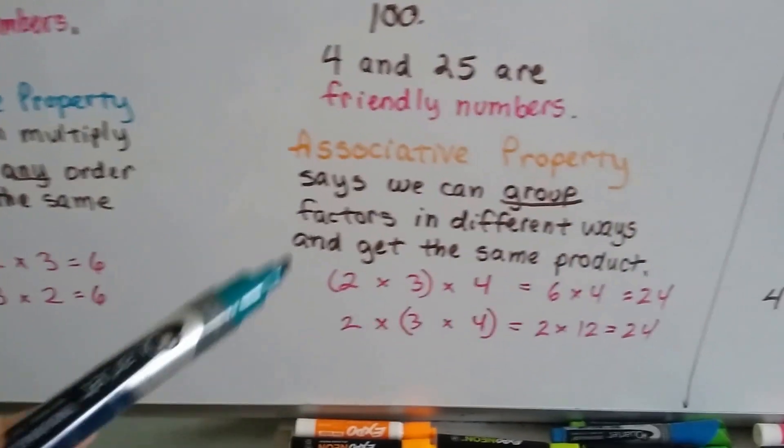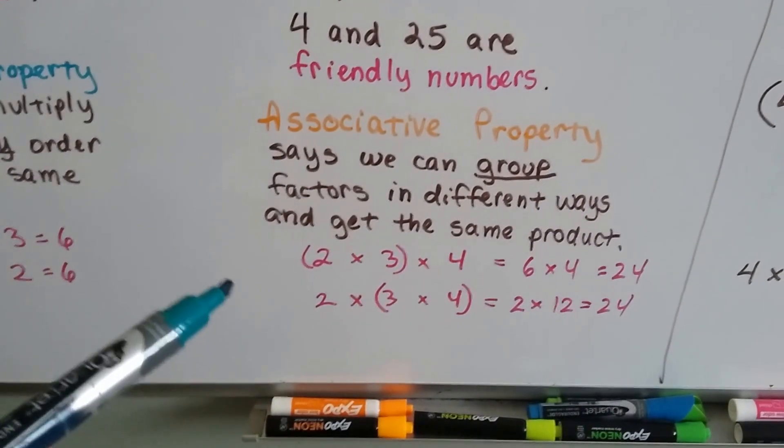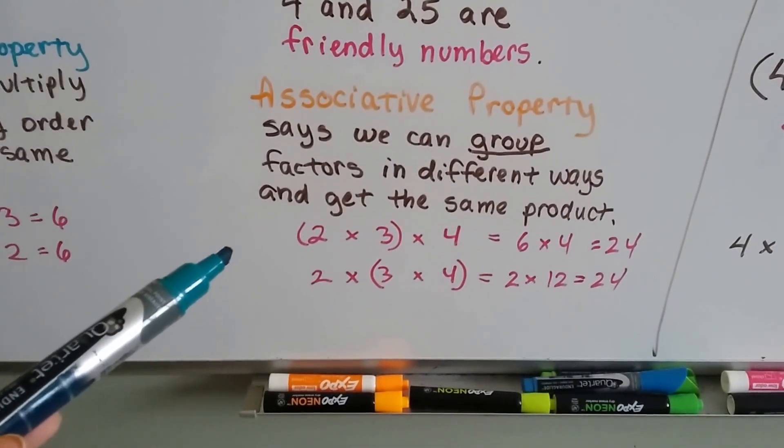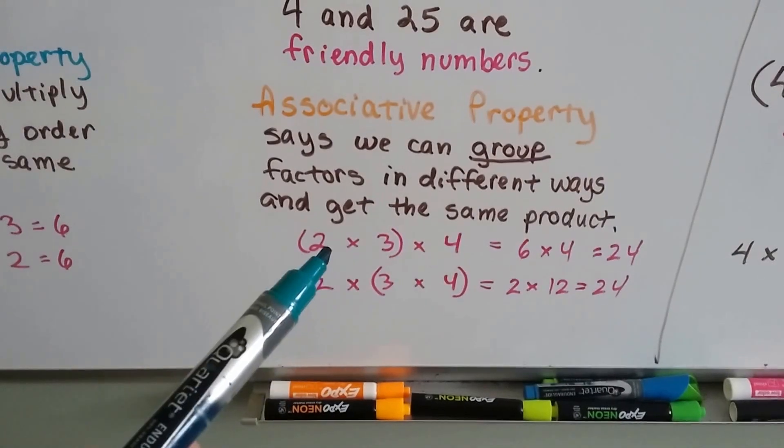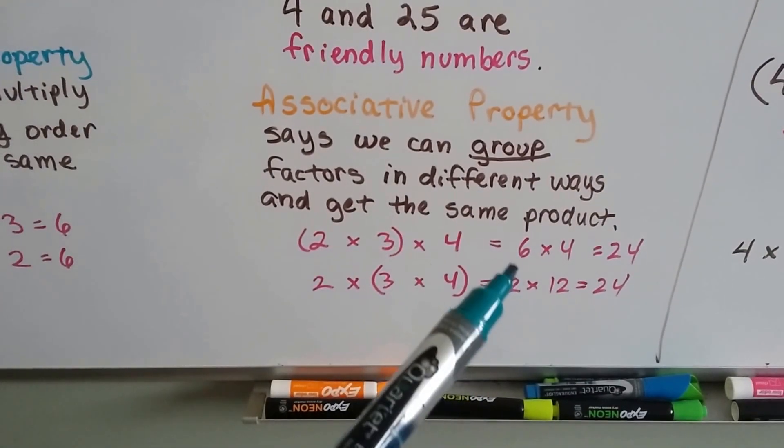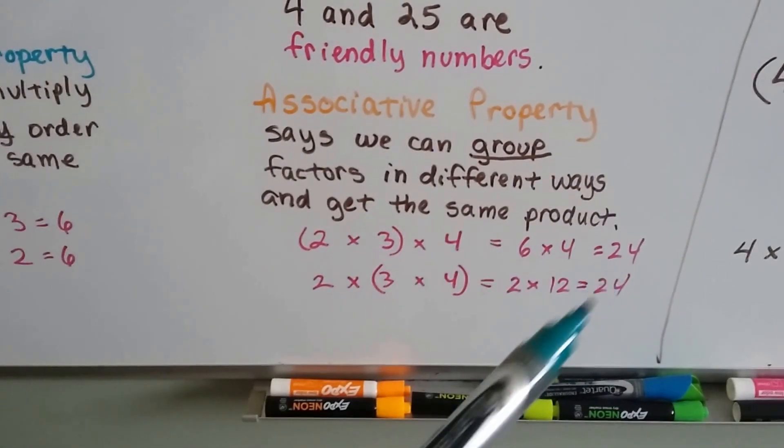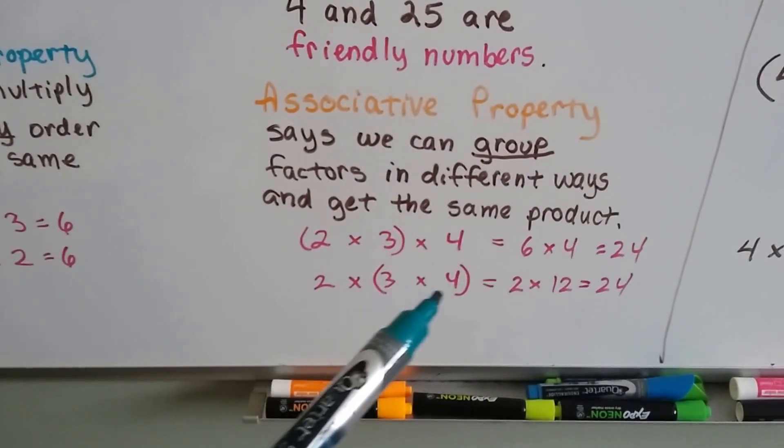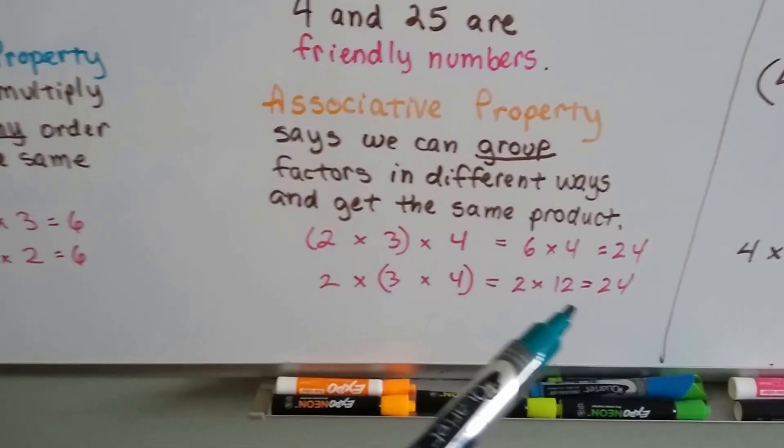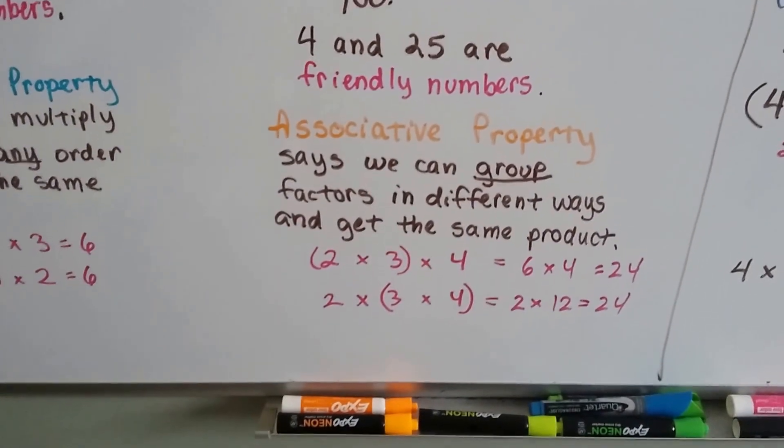Now, we can also use the associative property of multiplication. It says we can group factors in different ways and get the same product. We can multiply 2 times 3 to get 6, then multiply by 4 to get 24. Or we can multiply 3 and 4 first to get 12, then multiply by 2 to get 24. Either way, we get the same answer.